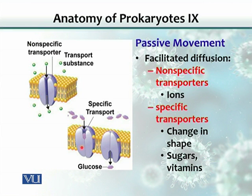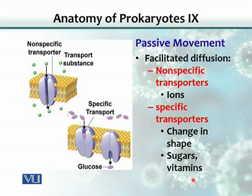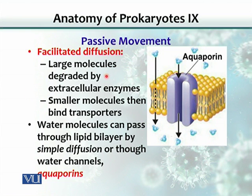On the other hand, there are proteins that uniquely bind to certain components. For example, this channel binds glucose from one side, a conformational change occurs, and the molecule is brought from one side of the membrane to the other. Sugars and vitamins are transported this way, with no energy required. If a molecule is too large to pass through a channel, it must first be degraded by enzymes released from the cell, breaking it into smaller molecules that can then pass through.